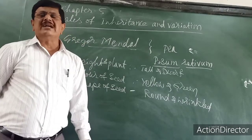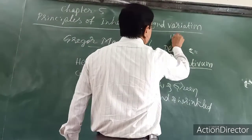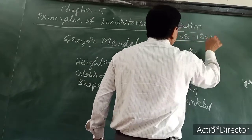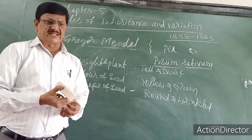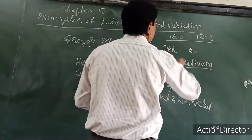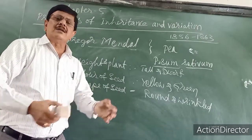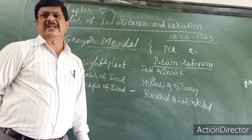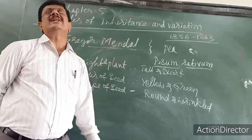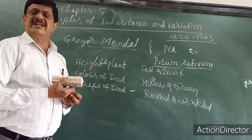He started to conduct crossing experiments. He conducted experiments from 1856 to 1863 — seven years of experiments. He analyzed the results and proposed them on the basis of mathematical equations. That is why his work became a landmark case in biology.